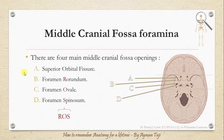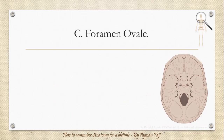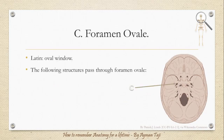The next foramen in the middle cranial fossa is the foramen rotundum, which transmits the maxillary nerve branch of the trigeminal nerve. We'll have a mnemonic about that in the cranial nerves lectures in the next section. Let's move on to the third foramen, the foramen ovale, which means in Latin 'an oval window.'